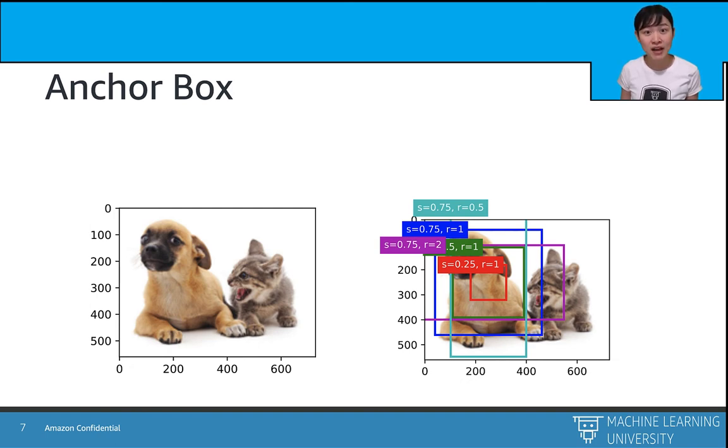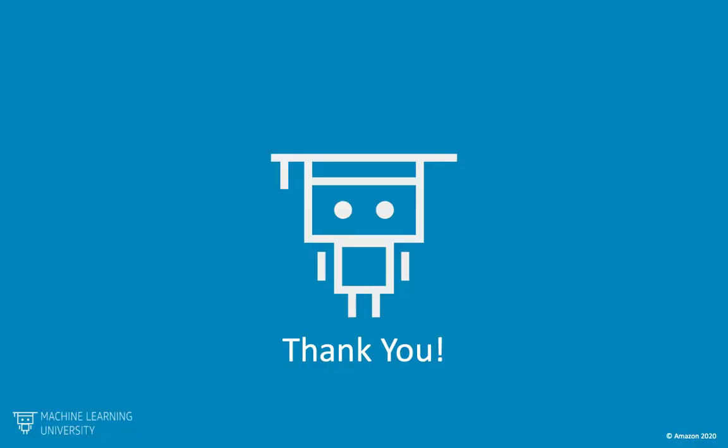We can predict boxes with different sizes and different aspect ratios, while these boxes are centered on the same pixel. We call these boxes anchor boxes. In this way, we are able to capture objects with different aspect ratios and different sizes.